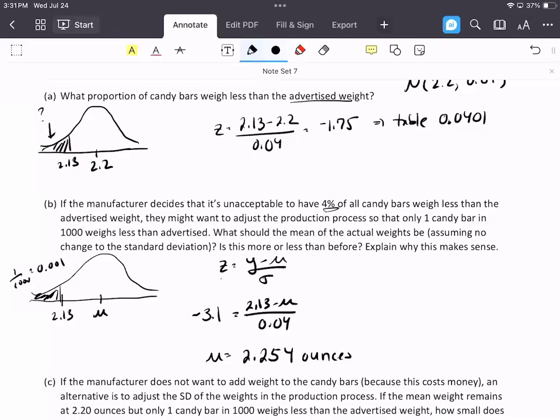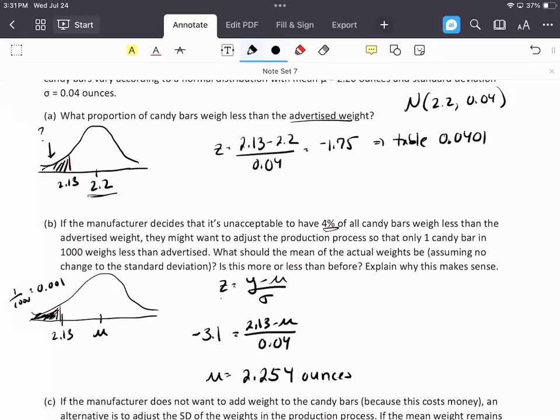So you had to go inside the table to get the z-score, which is on the outside. Because remember, underneath the curve is inside the table, and on the outside edges is where the z-score is. So the z-score was negative 3.1. And if you calculate it out, you would get the mu has to be 2.254 ounces, which is higher than what it was previously. Does it make sense that it's higher? Yeah, it does make sense. We're not changing the standard deviation, but what we want are fewer that are under the advertised weight. So the only way to do that, really, is to move the mu up higher. So it is higher than the original. Makes sense. We want to make sure very few are less than advertised, way less than that was advertised.